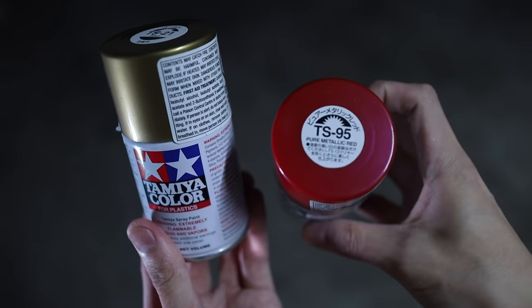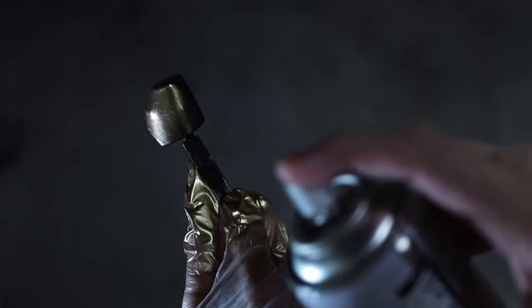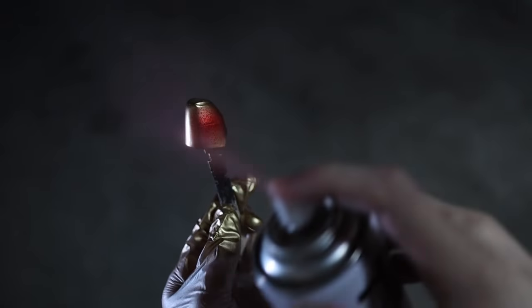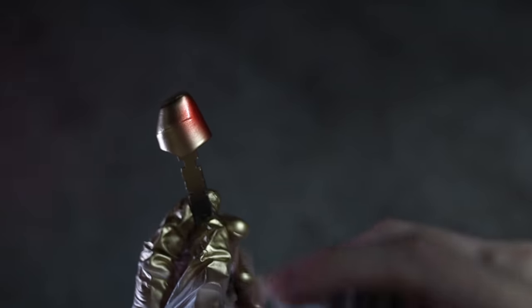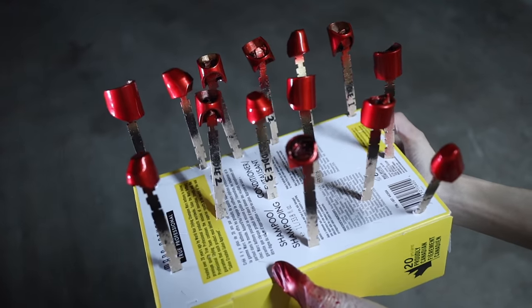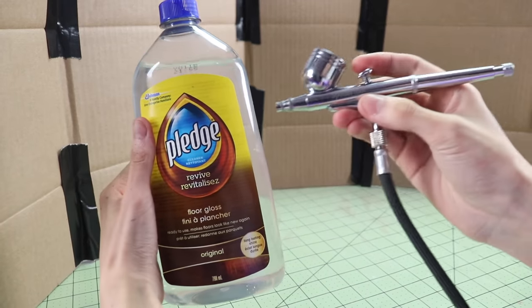For paint, I primed the foam with a few coats of black Plasti Dip, followed by gold Tamiya spray paint, and then red metallic Tamiya spray paint after that. Since the red metallic paint is kind of translucent, it won't show up very well if you try to spray it directly over the black Plasti Dip, so that's why we do a coat of gold first, which will make the red pop.